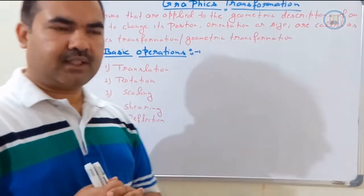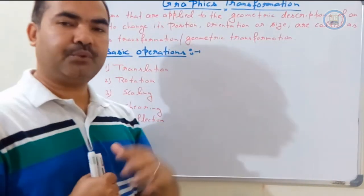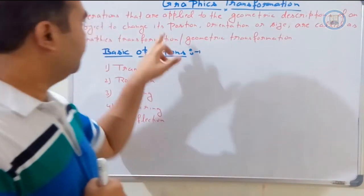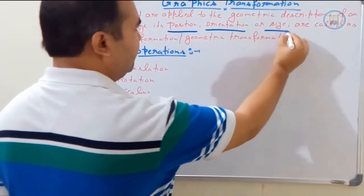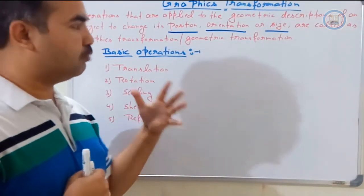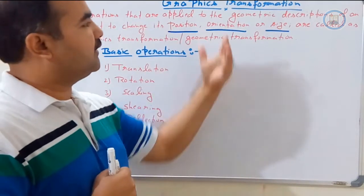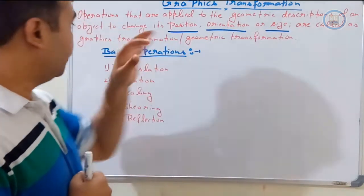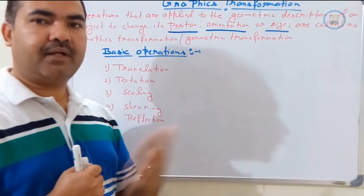What is transformation? Transformation means we are going to change something. We apply a mathematical operation on the geometry of any object — the geometric description of the object — to change its position, orientation, and size. Remember, in computer graphics, we are always doing mathematical operations in the background; mathematics and geometry are very important. Changing the geometric description of an object for its position, orientation, and size is called geometric transformation or graphics transformation, sometimes also referred to as mathematical modeling transformation.